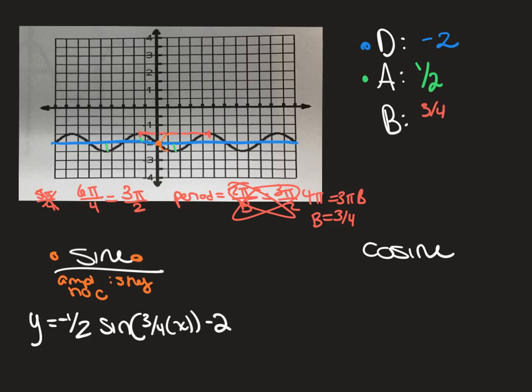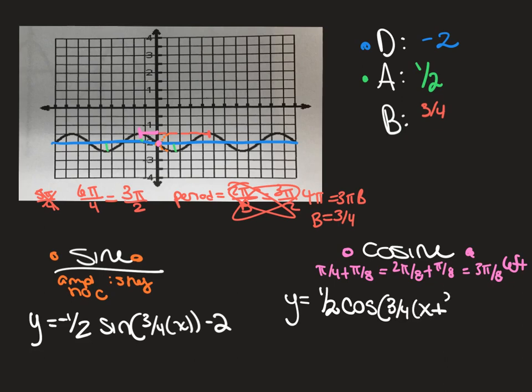For my cosine friend over here, I start in the middle, but I will need to start at a max. So that max right there is a pi over 4 and then a pi over 8. So I had a pi over 4 plus a pi over 8, which equals 2 pi over 8 plus pi over 8, which is 3 pi over 8 to the left. This graph moved 3 pi over 8 to the left. So y equals, my amplitude gets to be positive this time, because I start at a max back on the axis. Cosine, 3 over 4, x plus 3 pi over 8, and then minus your 2 on the outside.